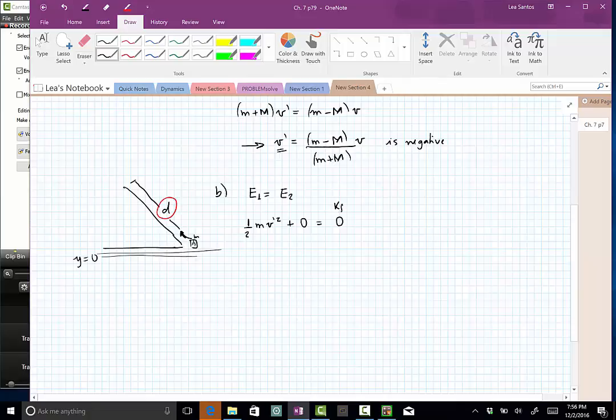so this will be the final kinetic energy, while the potential energy, the gravitational potential energy will be MGH. So you see that we are finding this height. With this conservation of mechanical energy, we are finding this height,